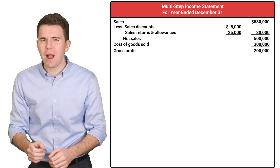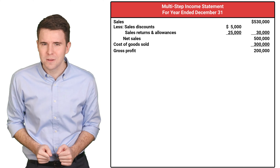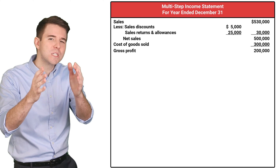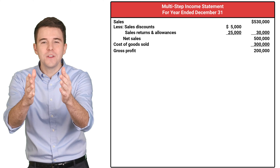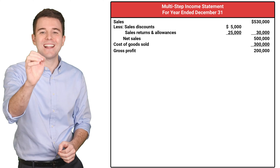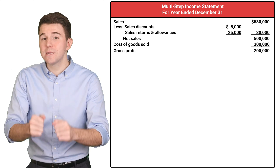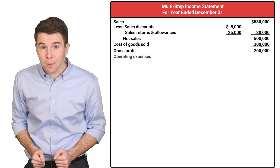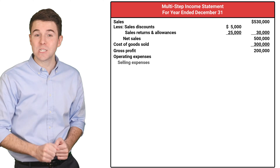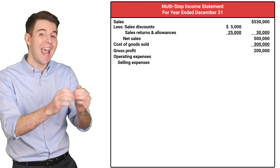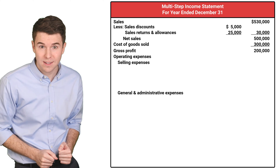Remember, gross profit is what we receive for selling the goods minus what we paid for the goods, and is often used to analyze operations. Next, we subtract operating expenses, which includes selling expenses and general and administrative expenses.